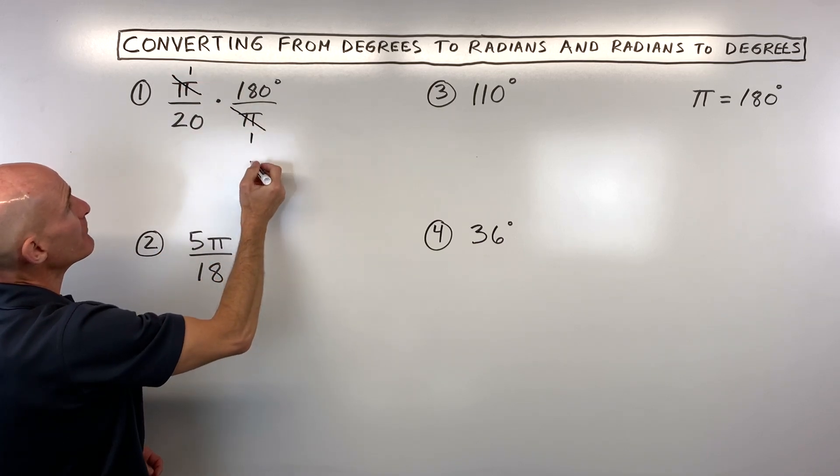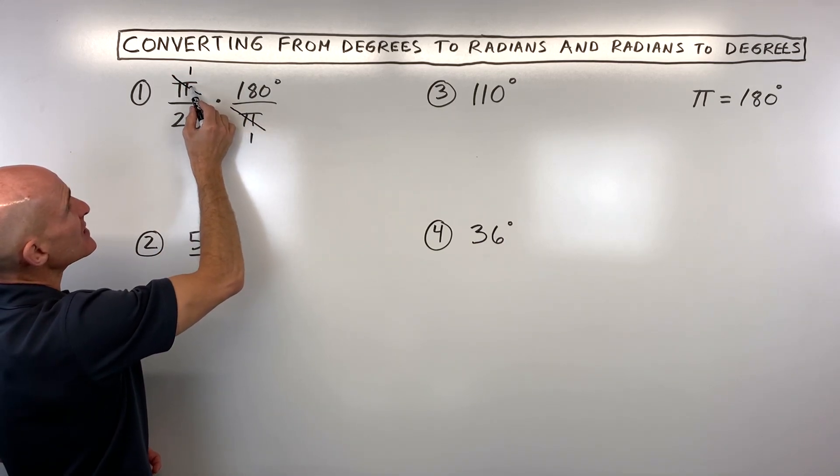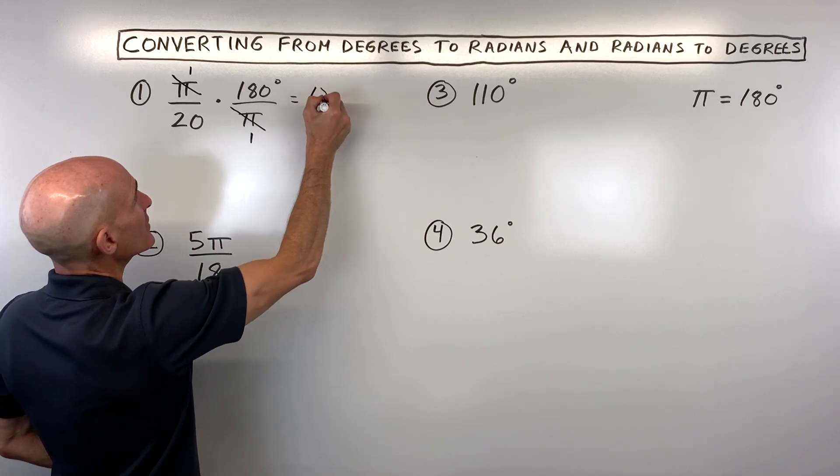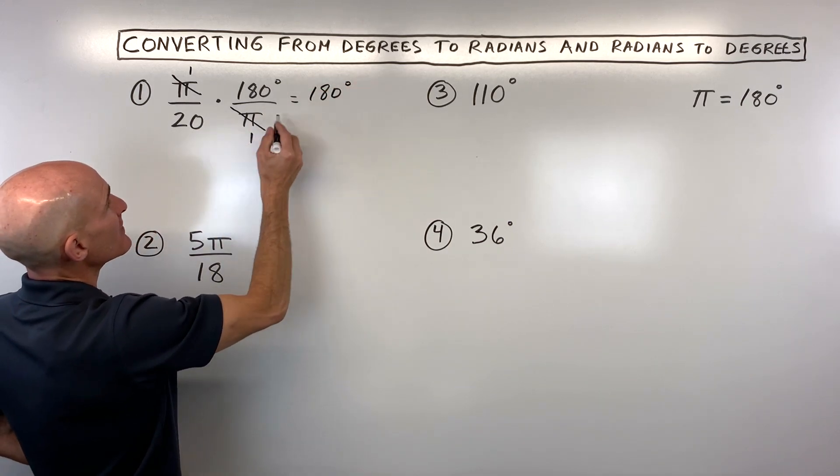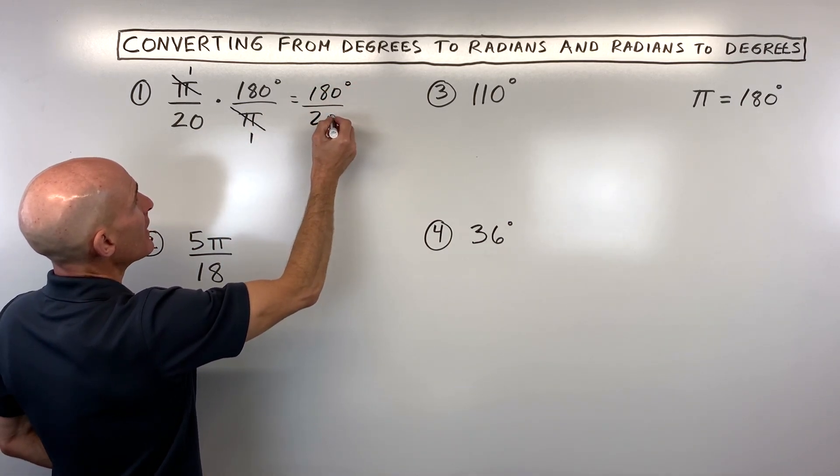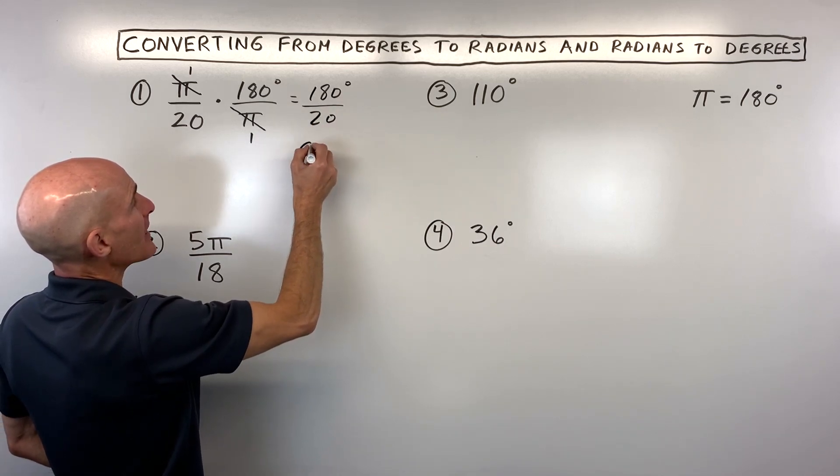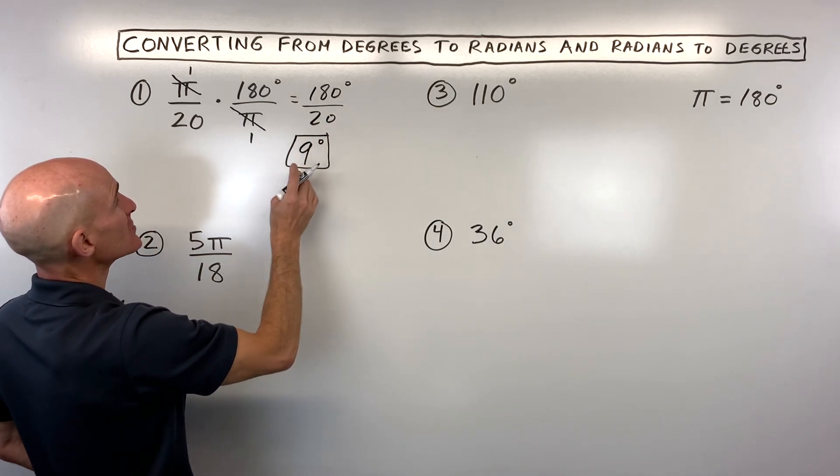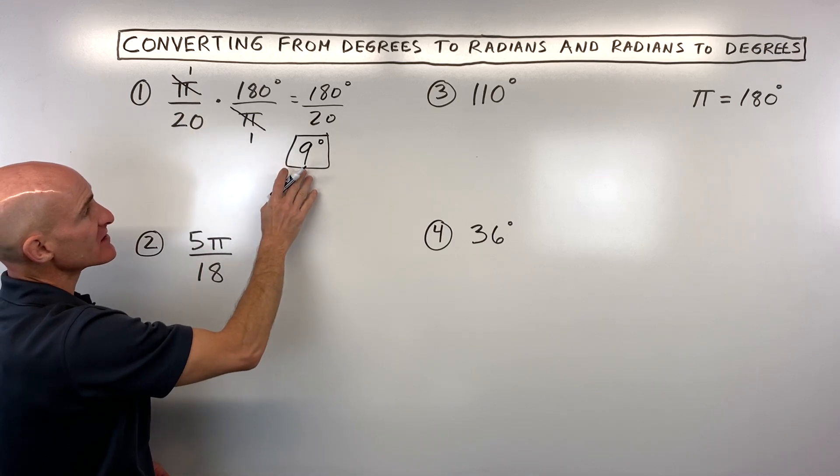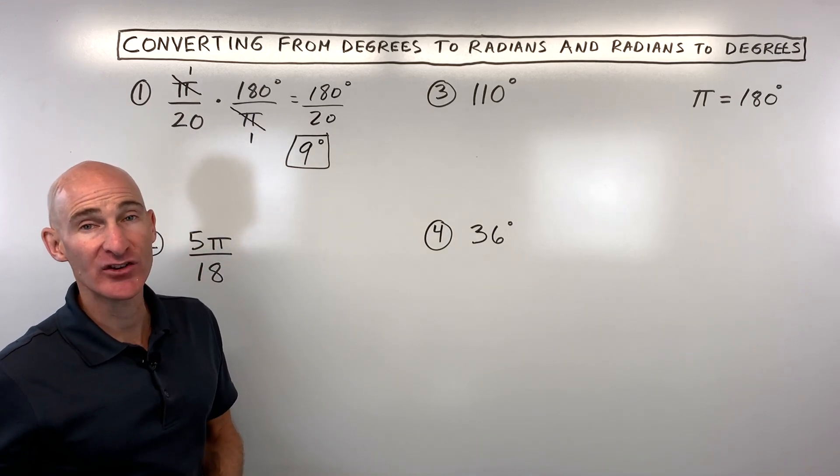So that goes in there one time. And when we multiply now, we can say 1 times 180 is 180, 20 times 1 is 20, and 20 goes into 180 9 times. So it's 9 degrees. So what this means is pi over 20 radians is equivalent to 9 degrees.